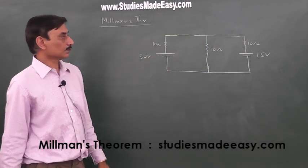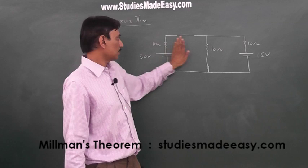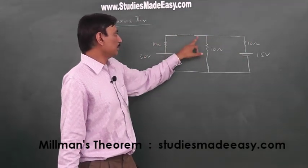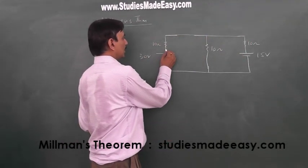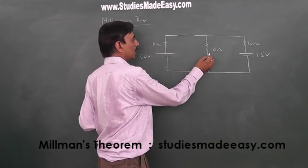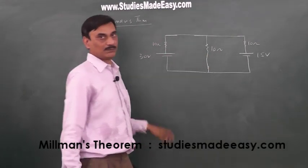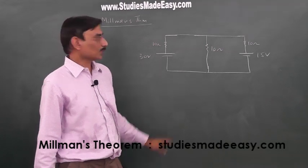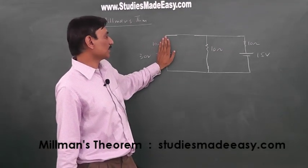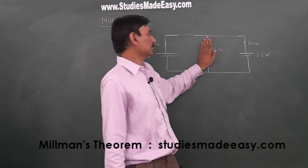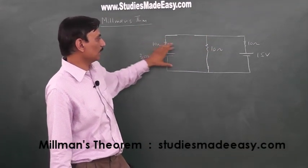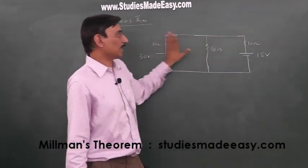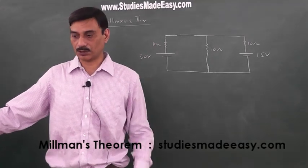You see, this is nothing midway. I cannot have resistance from here to here joining it, and that is not possible. Then Millman's theorem cannot be used. So, these units, that is battery and resistive units, they have to be parallel to each other. You should be having such units which are connected parallel to each other. That is one major restriction you have.